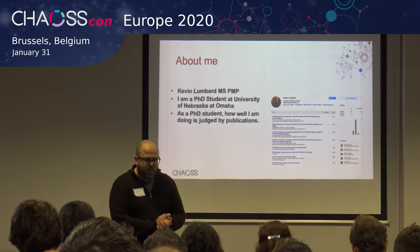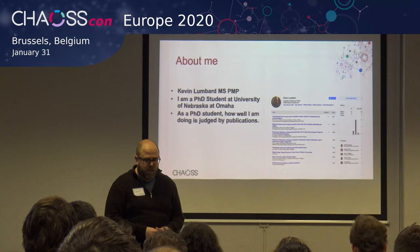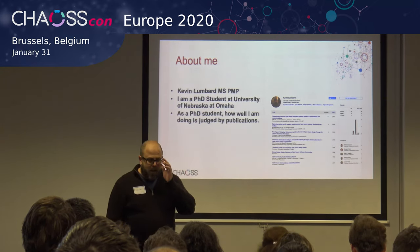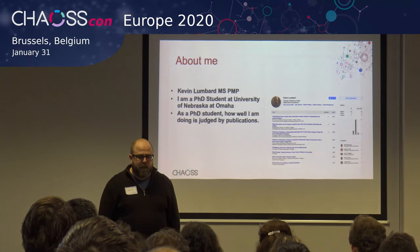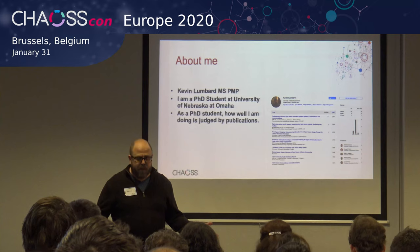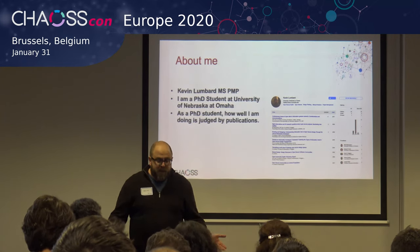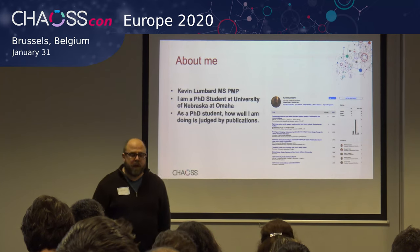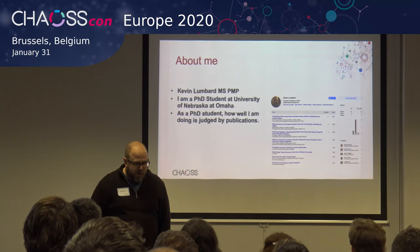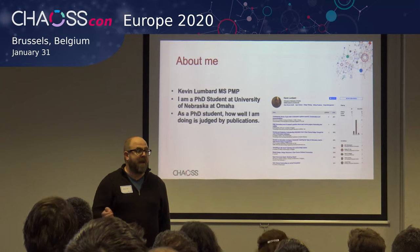A little bit of background on me. I've been working on the CHAOS Project for about three years. I'm a PhD student at the University of Nebraska, Omaha. As a PhD student, I need to make sure that I'm progressing and assessing how well I'm doing. But how can I measure that? Interestingly, as a PhD student, I'm judged almost completely by the number of publications I have. That metric is tied to my ability to get a job in academia when I'm done.